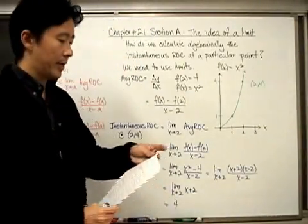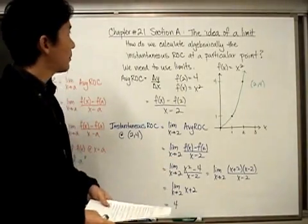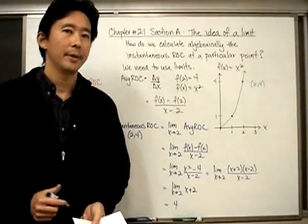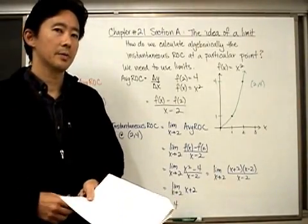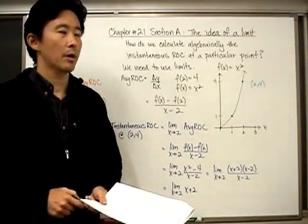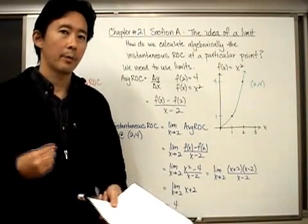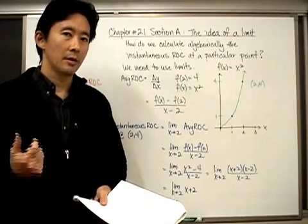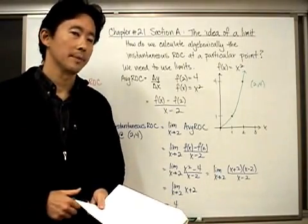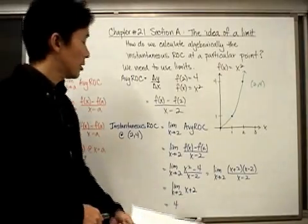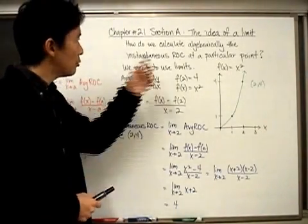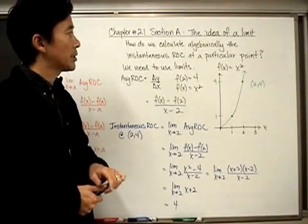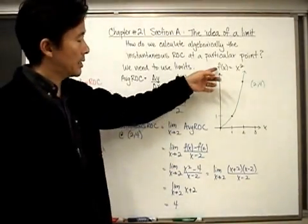Let's take a look at Chapter 21 Section A, which is called 'The Idea of a Limit.' We're going to focus on the algebraic process by which we can determine the instantaneous rate of change of any function at any particular point. The big question for this section is: how do we calculate algebraically the instantaneous rate of change at a particular point?